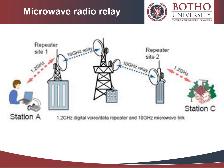Microwave radio relay is a technology widely used in the 1950s and 1960s for transmitting signals such as long-distance telephone calls and television programs between two terrestrial points on a narrow beam of microwaves. Microwaves are transmitted on a line-of-sight path between relay stations using directional antennas. The requirement of a line of sight limits the separation between stations to the visual horizon — about 30 to 50 miles, or about 48 to 80 kilometers. Before the widespread use of communications satellites, chains of microwave relay stations were used to transmit telecommunication signals over transcontinental distances.